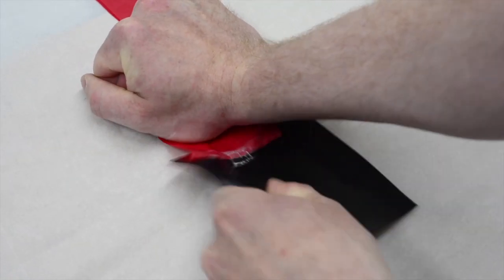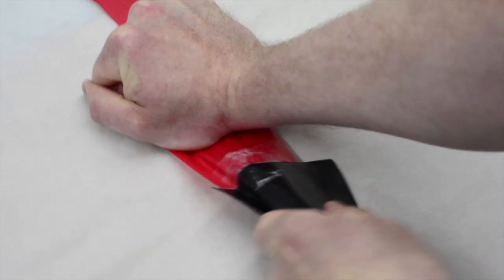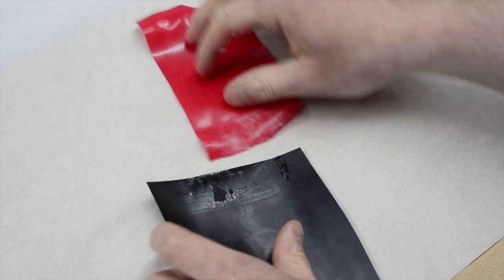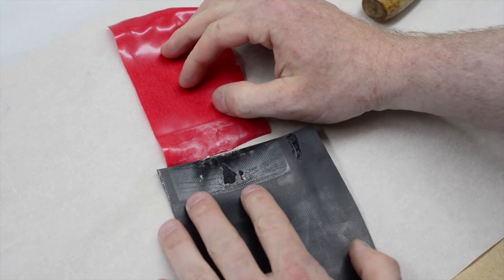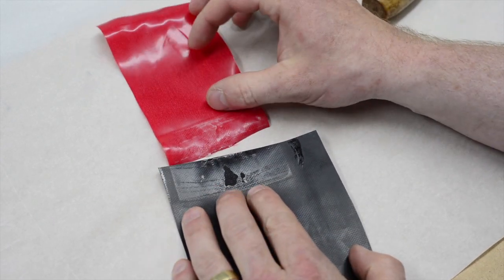Here it looks like the temperature was okay because the TPU layers did fuse together in the middle area, but I didn't iron it long enough on the sides because the TPU layers peeled apart there. Let's try it again.